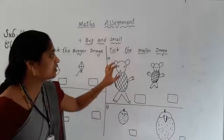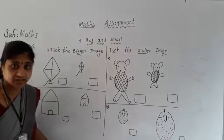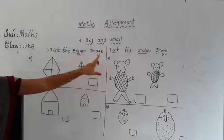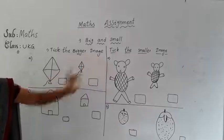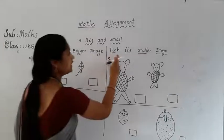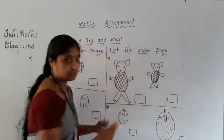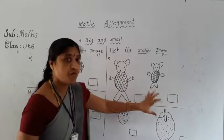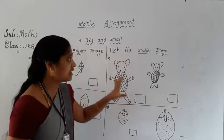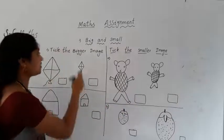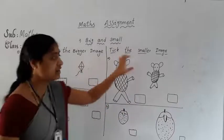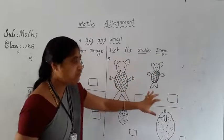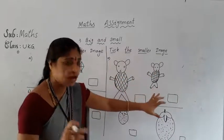Third one — this is the first bit: tick the bigger image. Second bit: tick the smaller image. See here, here two pictures are there. First you select here, which one is the smaller? First one is the bigger and second one is the smaller. See here, here two are there — which one is the smaller? You think and tick it.